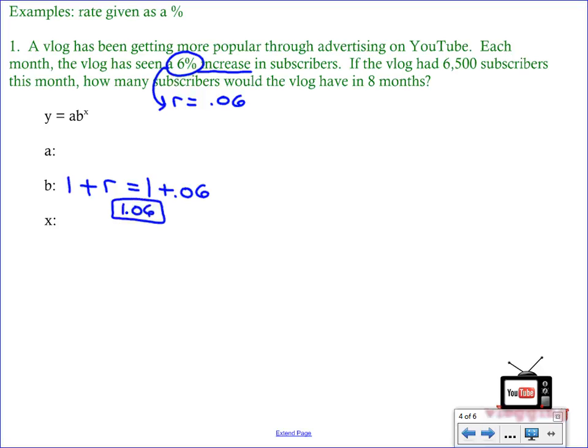The next sentence says, if the vlog had 6,500 subscribers this month, how many would the vlog have in eight months? So basically, this month is our starting point, so our original amount or our starting amount is going to be 6,500. So that will be our a value. And then lastly, the time that we're looking for, we want to know how many subscribers there will be in eight months, so the eight is going to replace the x.